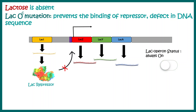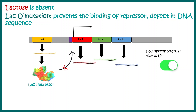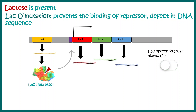The first mutation we'll discuss is lac Oc. This mutation prevents the binding of the repressor to the operator sequence — the defect is in the operator region of the DNA. When lactose is absent, the lac repressor cannot bind to the lac operator because of this sequence defect. Note that the lac repressor is fully functional and capable of binding, but the DNA sequence itself is defective.